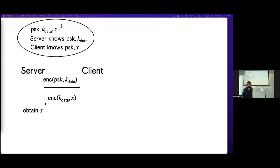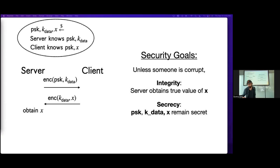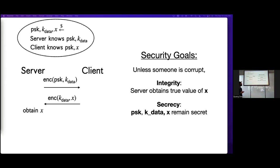What do we want to prove about this protocol? Broadly, two goals: an integrity goal, which means that the server actually gets the right value of x at the end, and a secrecy goal, which means all three values remain secret — the attacker can't derive the PSK, has no information about x, and so on.